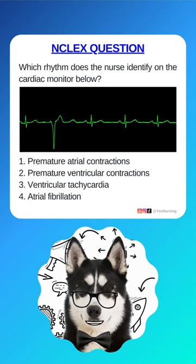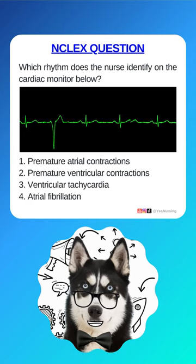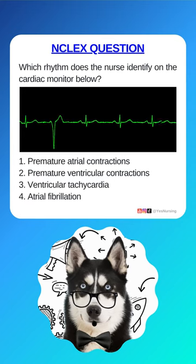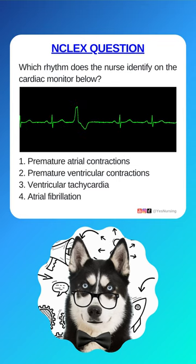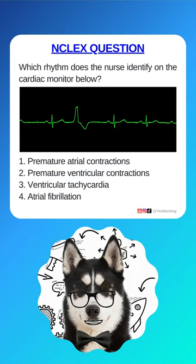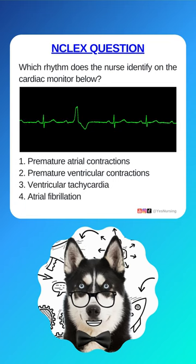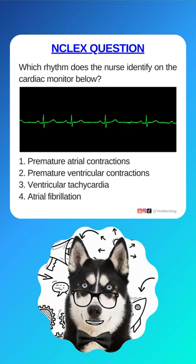Which rhythm does the nurse identify on the cardiac monitor below? 1. Premature atrial contractions. 2. Premature ventricular contractions. 3. Ventricular tachycardia. Or 4. Atrial fibrillation.